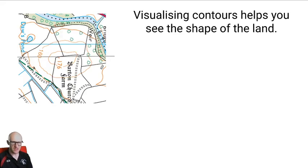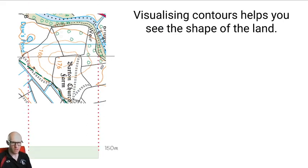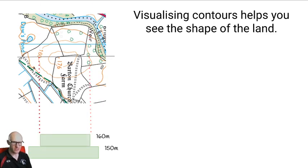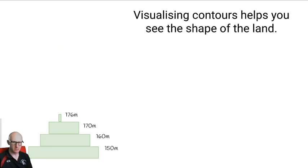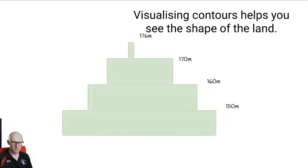To visualise a contour you might want to do a cross section. That involves taking the contours at every point and visualising them in a 3D view. This will then help you get to see the shape of the hill.